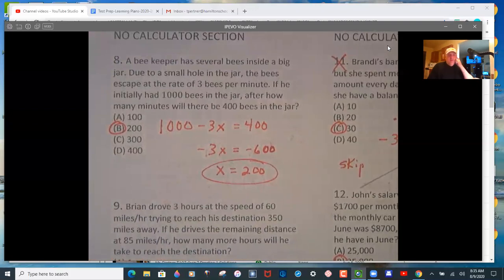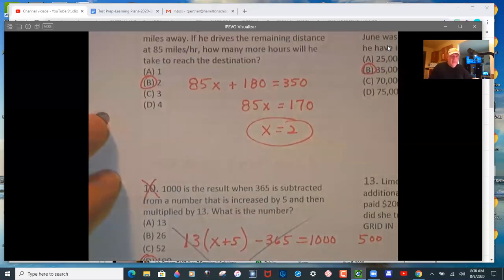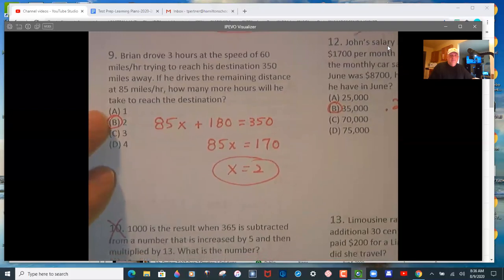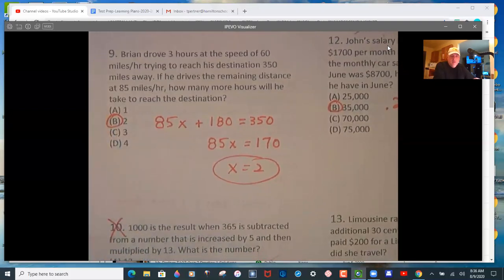Number 9, set it up first, 85 times x, the number of hours, plus 180. So he drove 3 hours at a speed of 60, equals 350, his whole distance. So he has to go for 2 hours at 85 miles per hour to get that to happen.